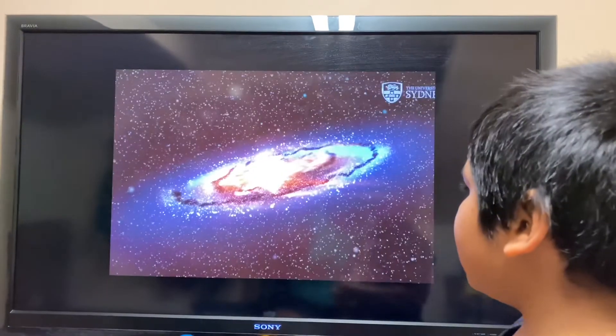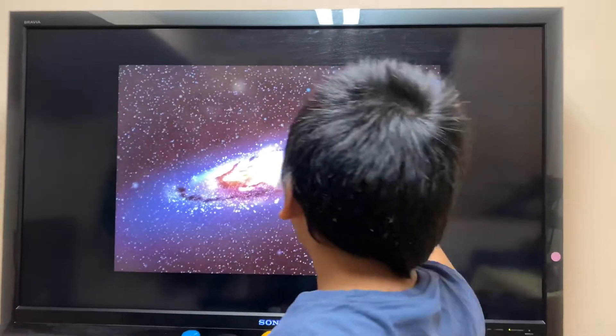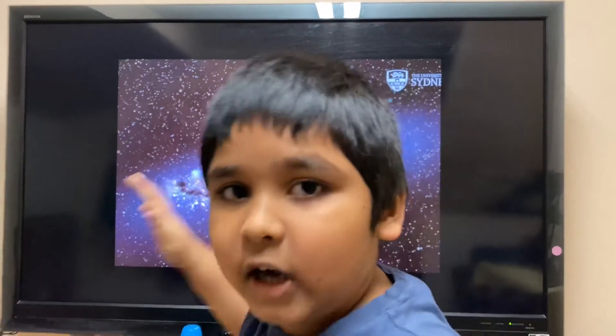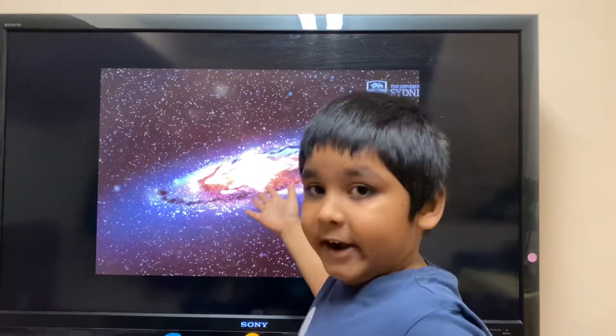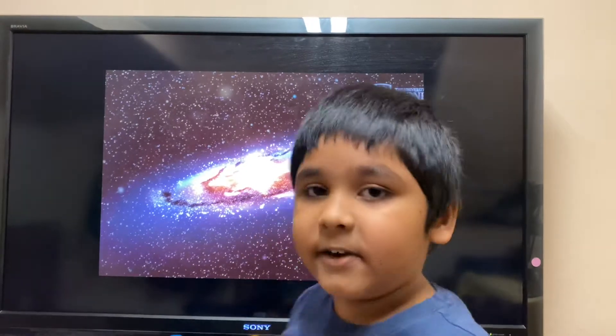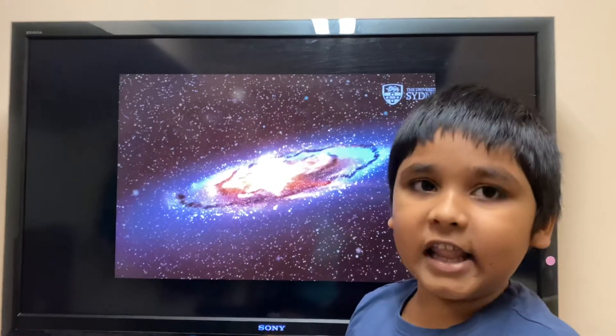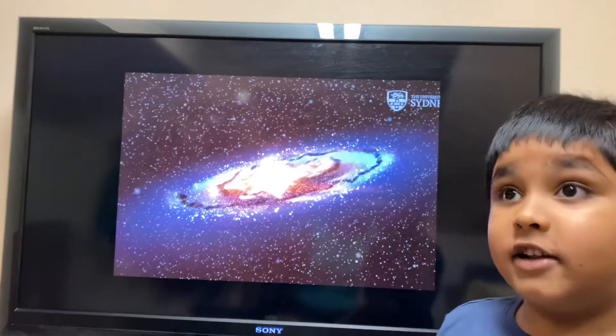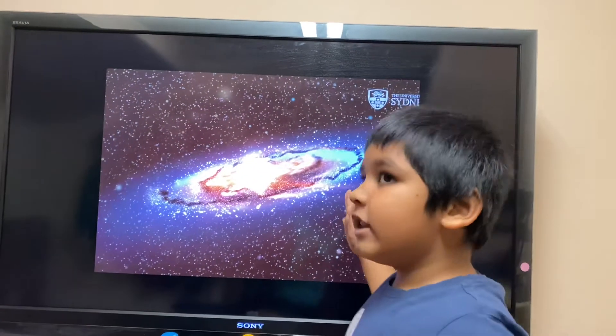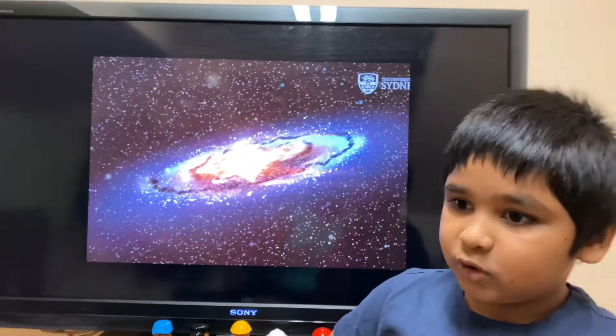The next one is the Andromeda Galaxy. Scientists figured out that 4 billion years later, the Andromeda and the Milky Way Galaxy will collide and make a beautiful galaxy. We don't know what will happen when they collide, but it will create a beautiful galaxy. And scientists have found lots of galaxies.